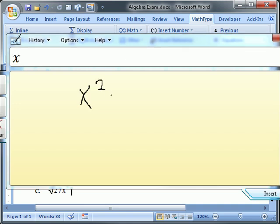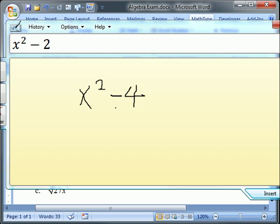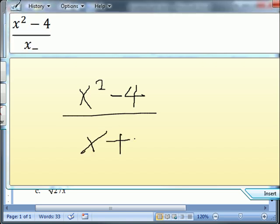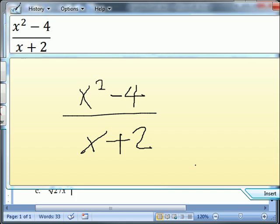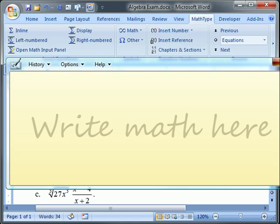X squared minus 4 over X plus 2. Okay, that's exactly what I want. When I click Insert, it goes into the Word document.